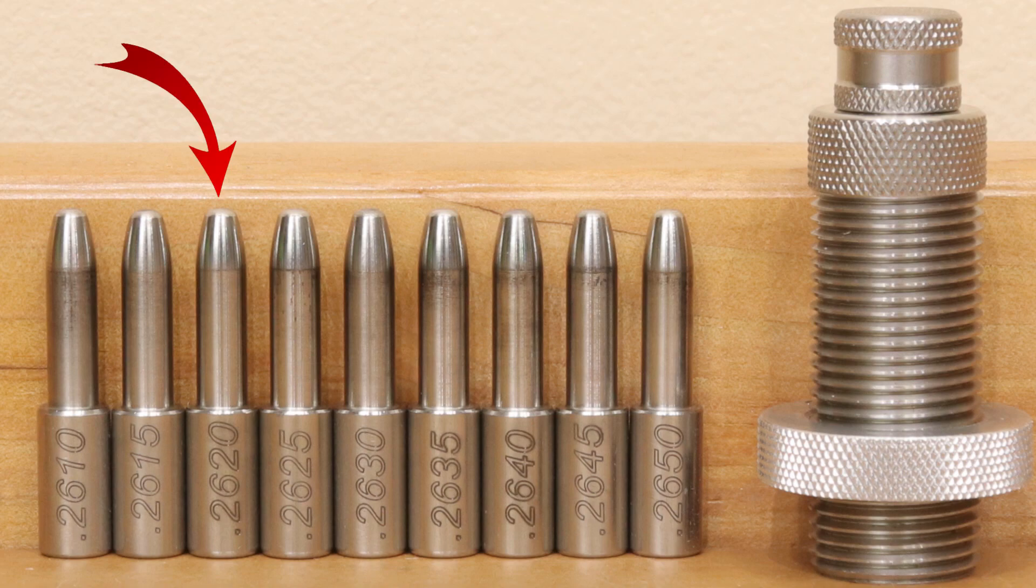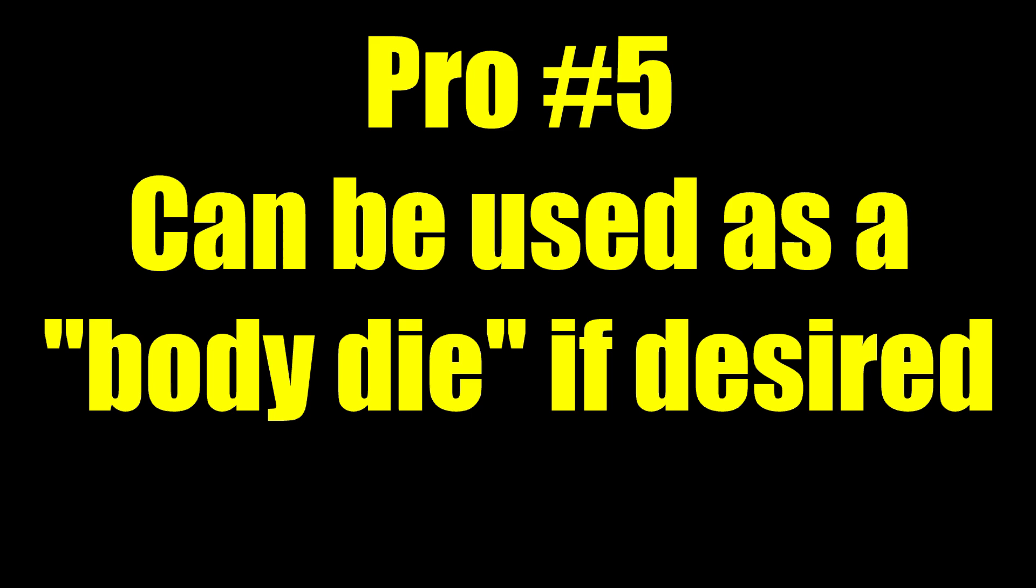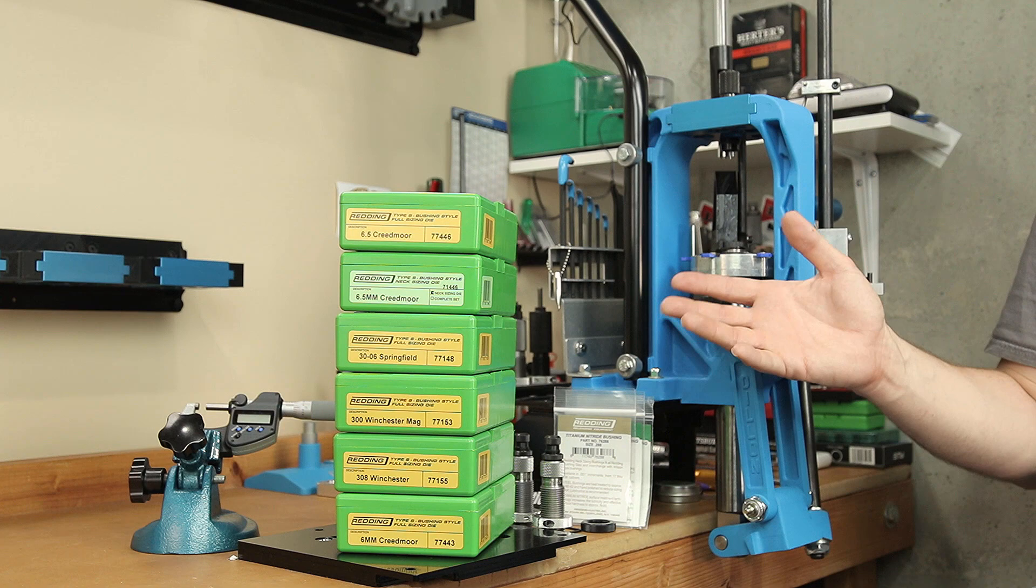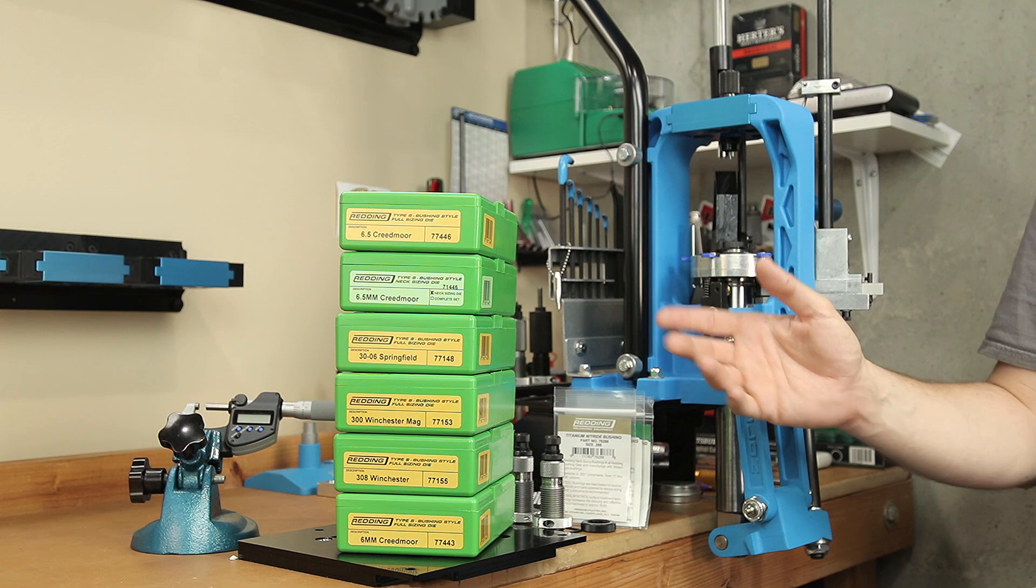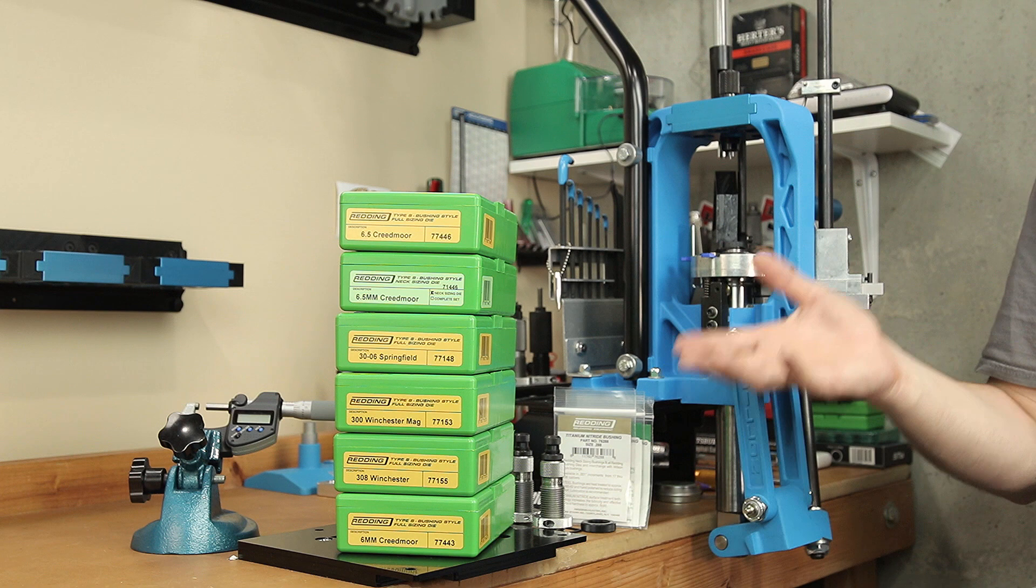The fifth reason you might want to think about the S-Die is you can remove the bushing entirely and use it essentially as a shoulder bump die. If you'd like to set the neck tension with a different device, say a collet die, you can simply buy an S-Die, remove the bushing completely, and do your full length size on the case without affecting the neck at all. So they're all sunshine and roses, right? Not exactly.